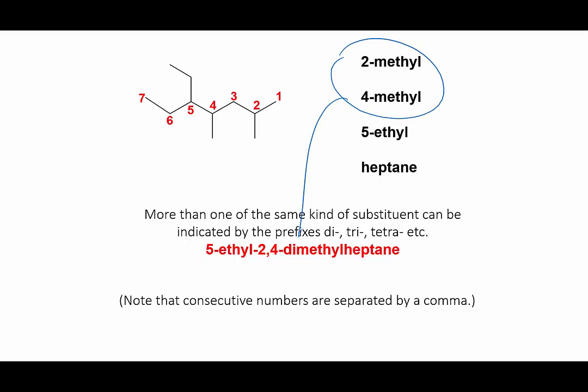Notice that just because we put the di in front of the methyl doesn't change the alphabetization. Ethyl comes before the dimethyl because E for ethyl comes before M for methyl in the alphabet. So di, tri, tetra don't affect the alphabetical ordering of the substituents.